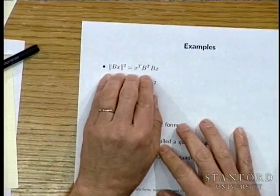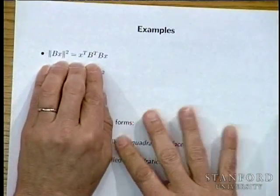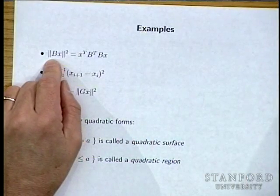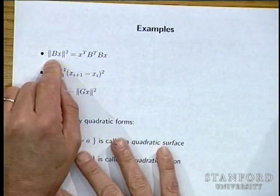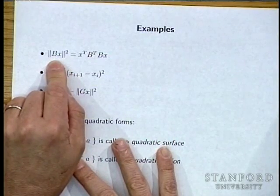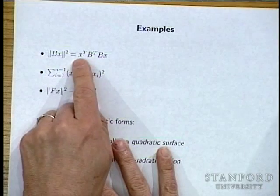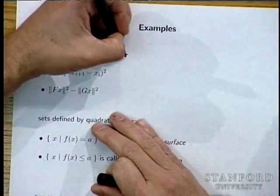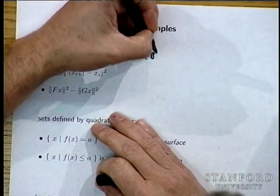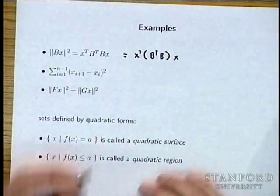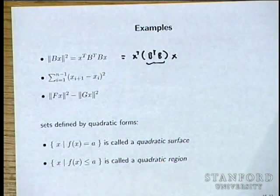Here's an example of a quadratic form: the norm squared of Bx, where B can have any dimension. If we expand this, it's X transpose B transpose BX. The matrix representing this quadratic form is B transpose B, and this matrix is already symmetric — so it doesn't need to be symmetrized.